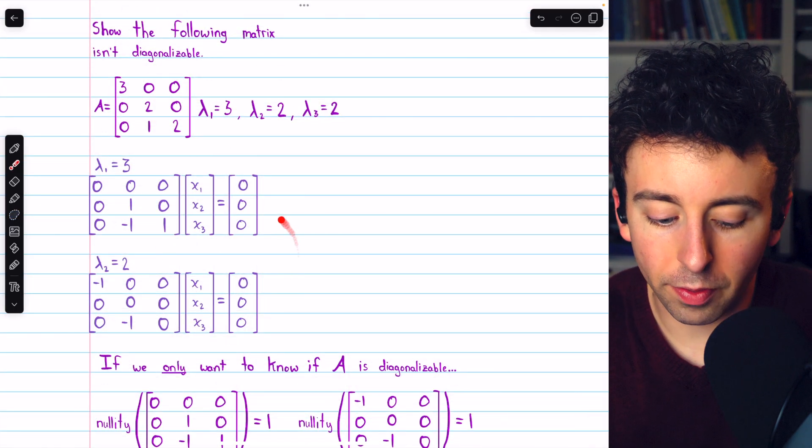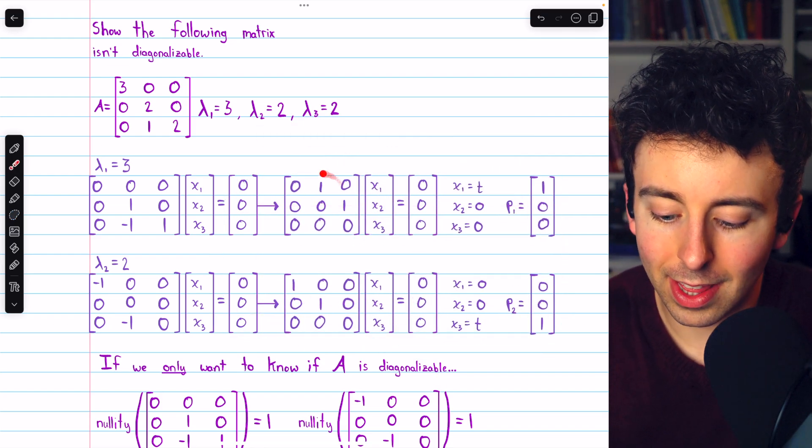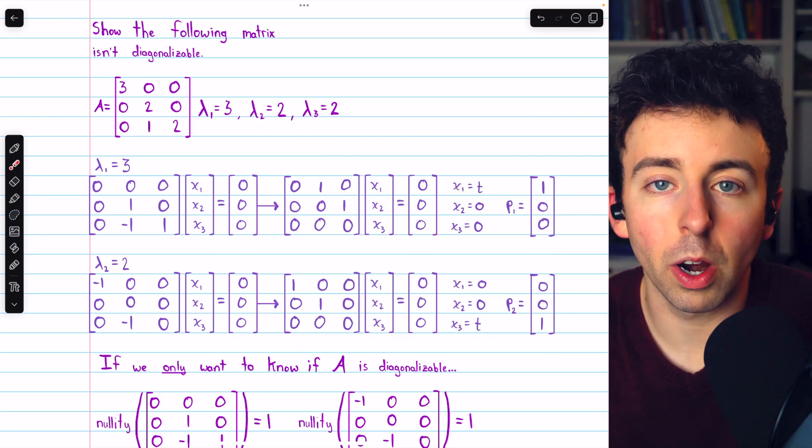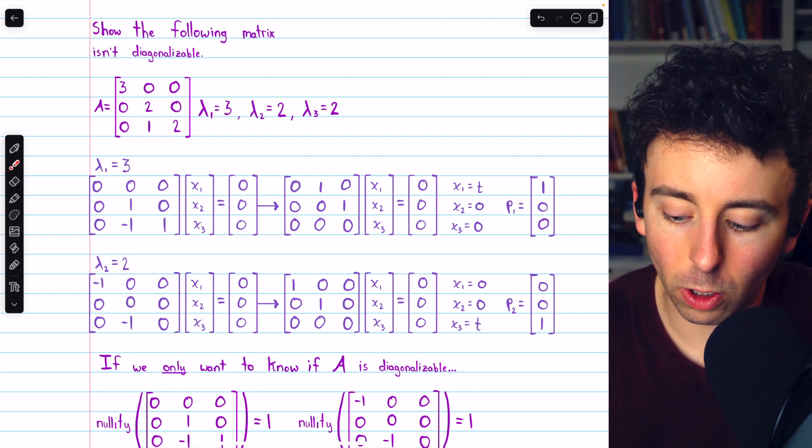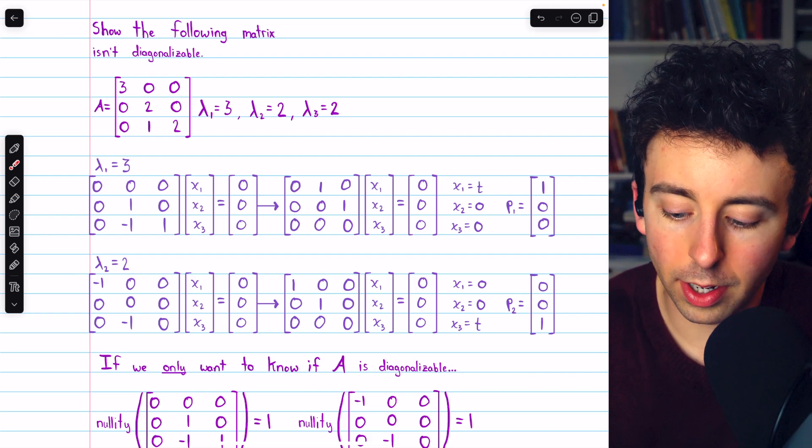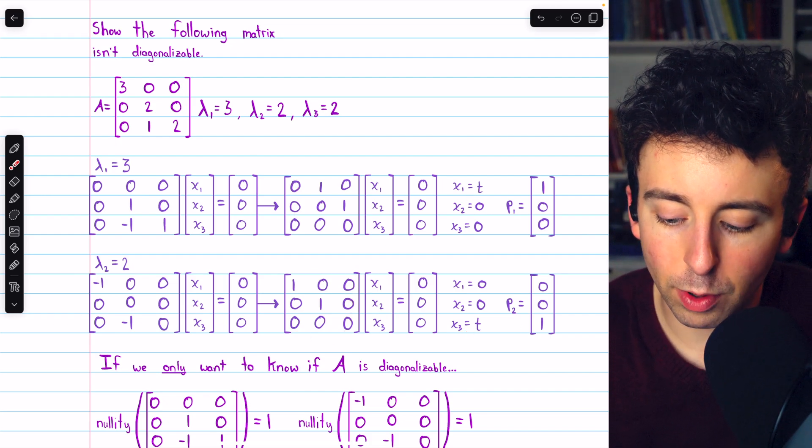To do that, we would just solve these systems. Using Gauss-Jordan elimination, you can verify that we would arrive at this and this reduced row echelon form matrix, and they each give way to a single basis vector. This solution has x1 as a free variable, and this solution has x3 as a free variable.